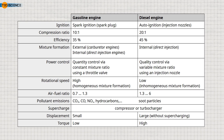For example, a diesel engine requires a displacement of around 2.5 liters for an output of 100 kilowatts at a speed of 5,000 revolutions per minute. In contrast, a petrol engine only requires a displacement of around 1.5 liters for the same output at a speed of 7,000 revolutions per minute. The engine torque is about 190 Nm for a diesel engine and about 135 Nm for a gasoline engine.